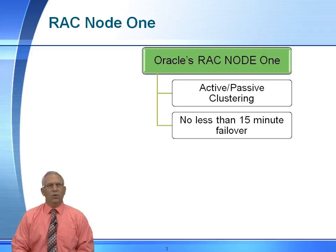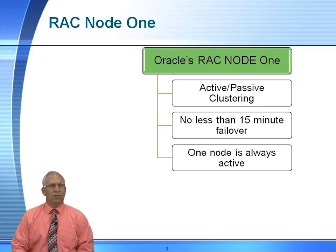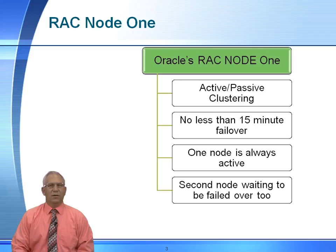Keep in mind that RAC 1 Node does not give you additional throughput. In a traditional RAC environment, if you have multiple servers and each server can handle 50 users, and you're in a three-node cluster, you might be able to handle 150 users. In a RAC 1 Node environment with a two-node server where each handles 50 users, all 100 users are going through the first node, which may be taxing that node. If the node was only designed for 50 users, you can only really handle 50 users. It gives us failover capability, but not additional processing power. The second node is strictly there waiting to be failed over to.